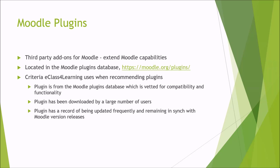The third criterion is that the plugin has a record of being updated frequently and remaining in sync with the Moodle version releases. As Moodle puts out a new major version every six months, plugins have to be updated for those versions. Some plugin developers let their versions lag behind. If you're running Moodle 2.9 and the current version is 3.1 or 3.2, that's okay for now — but when you go to upgrade to 3.1 or 3.2 and that plugin hasn't been updated, it's very likely going to break and not work.